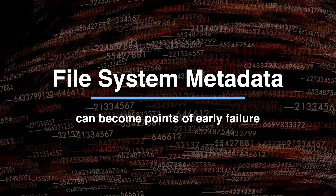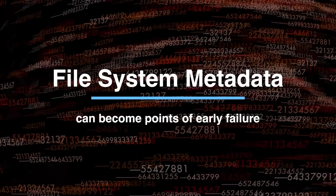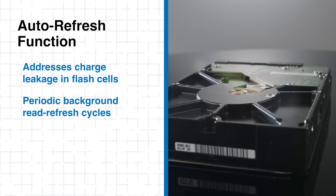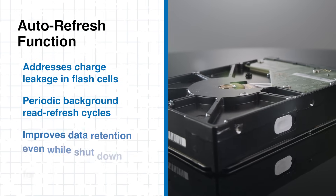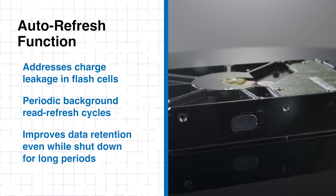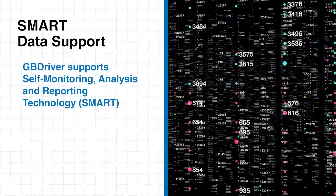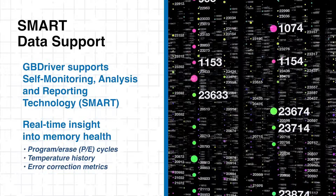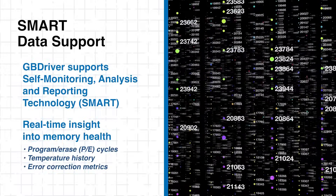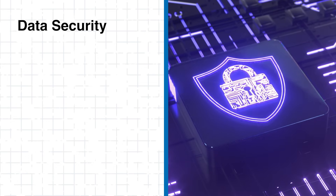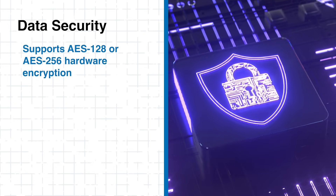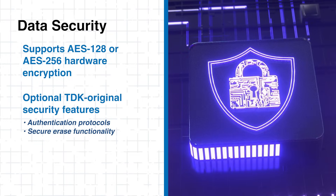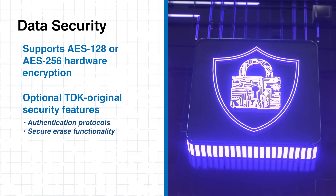An important note is that file system metadata can become points of early failure. The AutoFresh function addresses charge leakage in flash cells by periodically performing background refresh cycles, boosting data retention even when systems are powered down for long periods. For diagnostics and reliability tracking, SMART data support offers real-time monitoring of memory health, including PE cycles, temperature trends, and error rates. TDK also excels on the security front, including AES-128 or AES-256 hardware encryption with optional proprietary features like authentication protocols and secure arrays for sensitive applications.